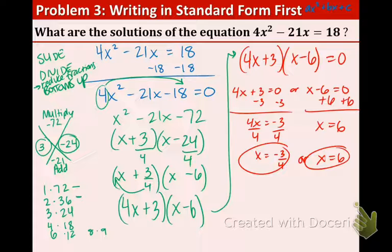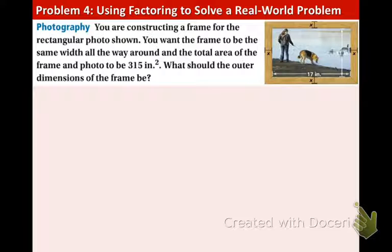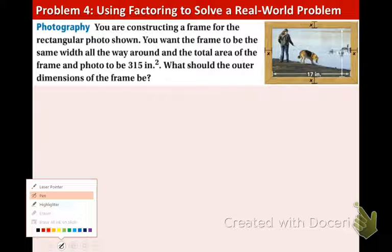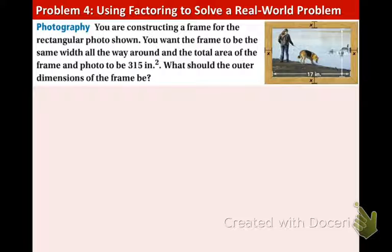Our last example. Use factoring to solve a real-world problem. This is involving a picture frame, which is a very common application to these kinds of problems. So, you are constructing a frame for the rectangular photo shown. You want the frame to be the same width all the way around, which makes sense. And the total area of the frame and photo is going to be 315 inches squared. What should the outer dimensions of the frame be?